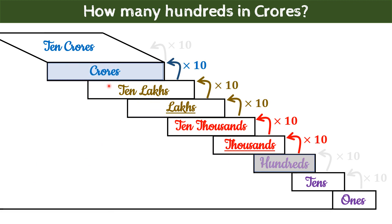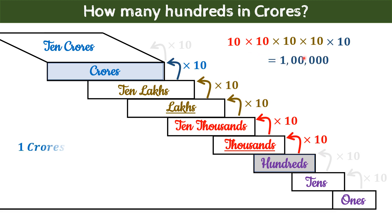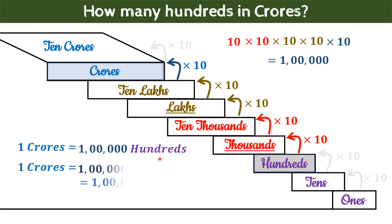Similarly, compare 1 Crore with 100s. Here we need to climb five steps, and each step's value is 10 times more than the previous. इसलिए 100 से 1 Crore तक जाने में जितने भी 10s हैं, सब एक साथ multiplied होंगे। हर 10 को multiply करने पर हमें एक number मिलेगा जिसमें five zeros हैं, जिसे हम 1 Lakh read करते हैं। Hence, अगर हम किसी को 1 Crore rupees देना है, तो हमें 100 rupees के 1 Lakh notes देने होंगे।